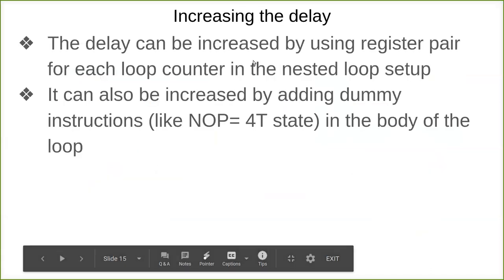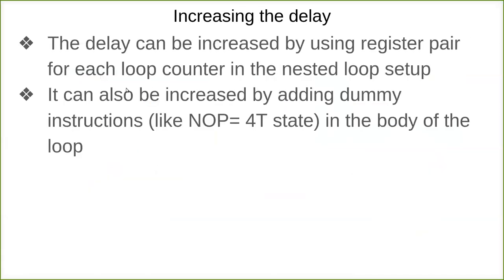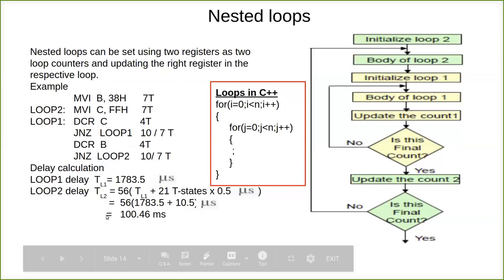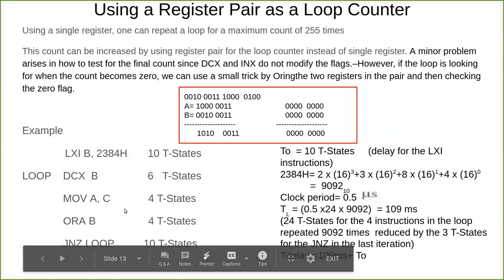The delay can be increased by using a register pair for each loop counter in the nested loop setup. It can also be increased by adding dummy instructions like NOP, which is 4T states. Execution of these instructions increases the time delay. But this is necessary for checking. If you want to increase more time, give more time delay, you can use NOP.